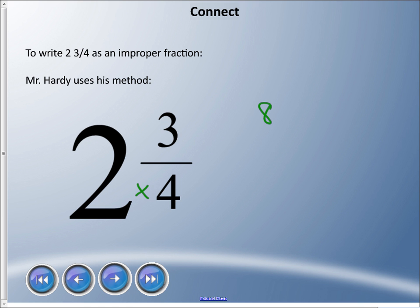We're always going to then add the top number, so plus three is eleven, and we always keep the same denominator. So we have eleven quarters. That's the way I recommend: multiply here and then add the numerator. That will get your numerator in your improper fraction, and then just keep the same denominator.